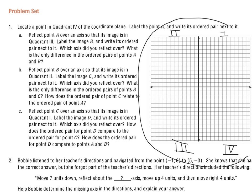So, to start, I need to locate a point in quadrant 4, and then label it A. So I'm going to come over here and I'm going to label it, I'll put a point right there, and it's A. And then I need the ordered pair for it.